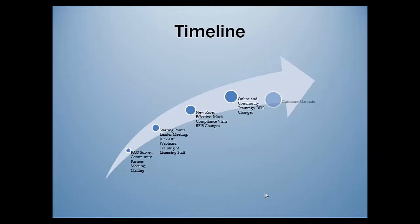Later in the winter, we will have our guidance manuals. One manual is being developed for each set of regulations and it will be a guide to understanding the licensing rules. It's not possible to create a guidance manual when the rules haven't been adopted, so we haven't been able to create them prior to now. We're going to use the training opportunities and beginning stages of implementing new rules as a tool to help us know what to put in those guidance manuals.